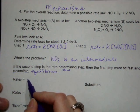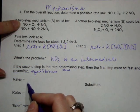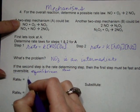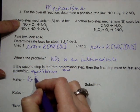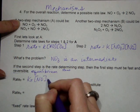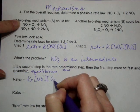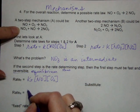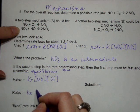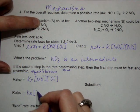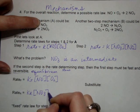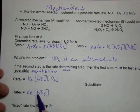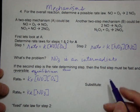So I'm going to rewrite the mechanism for step one, both forward and backward. So the rate for the forward, Kf equals concentration of NO times concentration of O2. And the rate backward, Kr. Now I'm going in the reverse direction, is concentration of NO3.